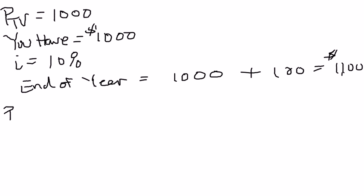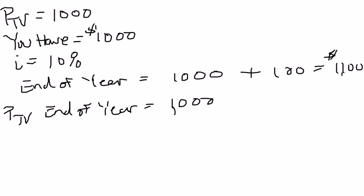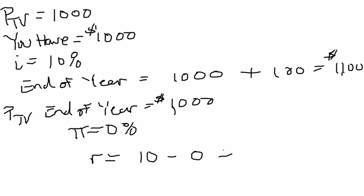Now let's say the price of the TV at the end of the year is still one thousand dollars — meaning the inflation rate is zero percent. Then at the end of the year you have eleven hundred dollars. You can use that to buy a TV for one thousand dollars and still have a hundred dollars left over — one tenth of a TV. So your real return to savings is one tenth of a TV, or ten percent, because the real interest rate equals the nominal interest rate minus the inflation rate: ten percent minus zero equals ten percent.